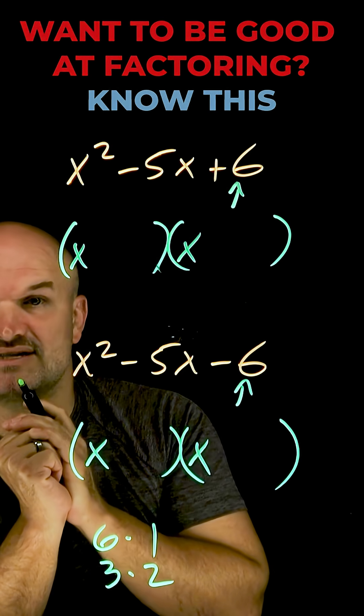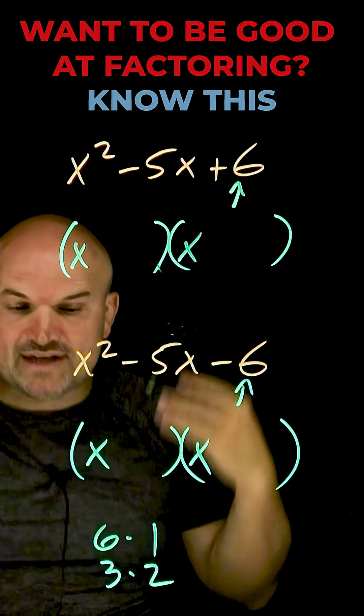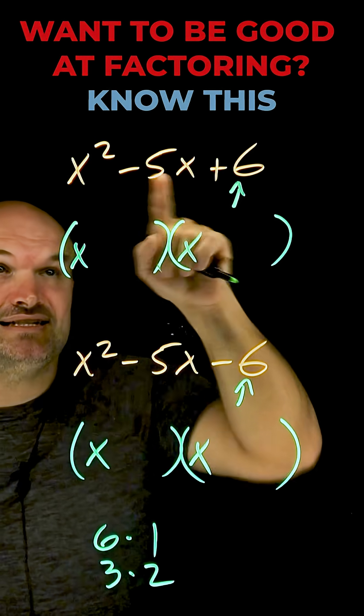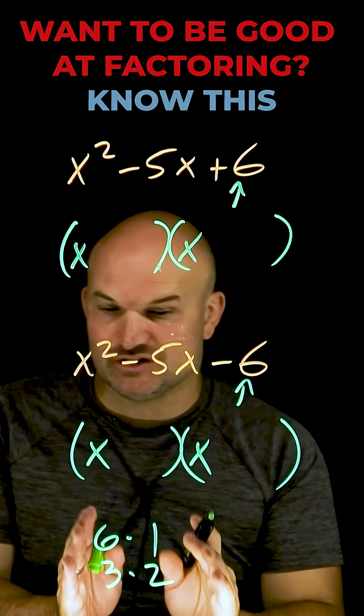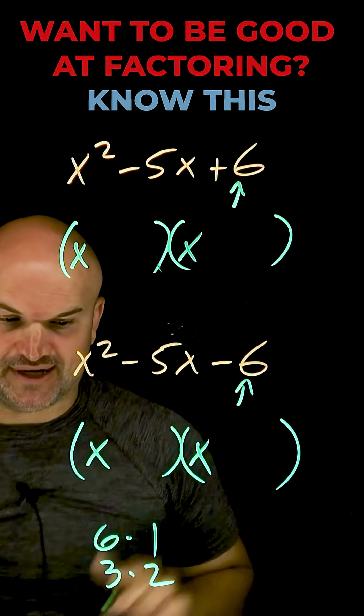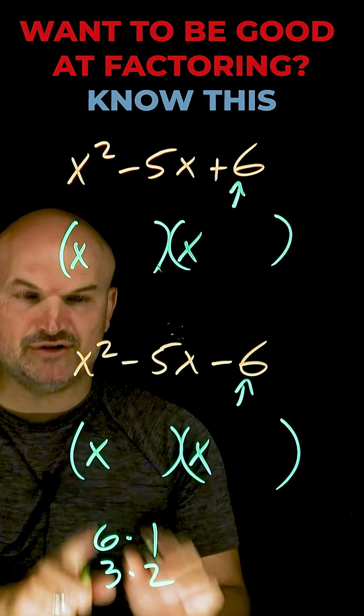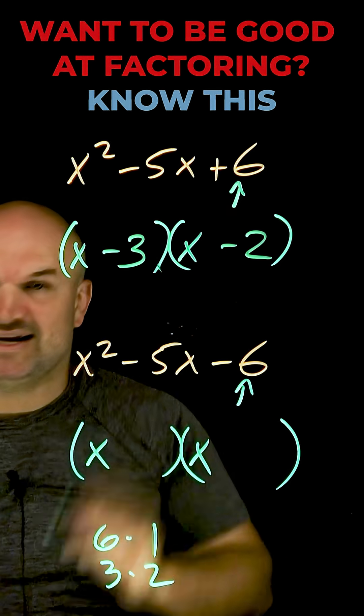Here's where the sum and difference comes into play. Since this last term is positive, I'm thinking sum. So what I'm doing is I'm thinking what two numbers are going to add to give me my middle term, or what two factors add to give me this middle term. Obviously, six and one is not going to work out. I know three and two will add to give me a five. However, it's a negative five. So therefore, my two factors have to be a negative three and a negative two.